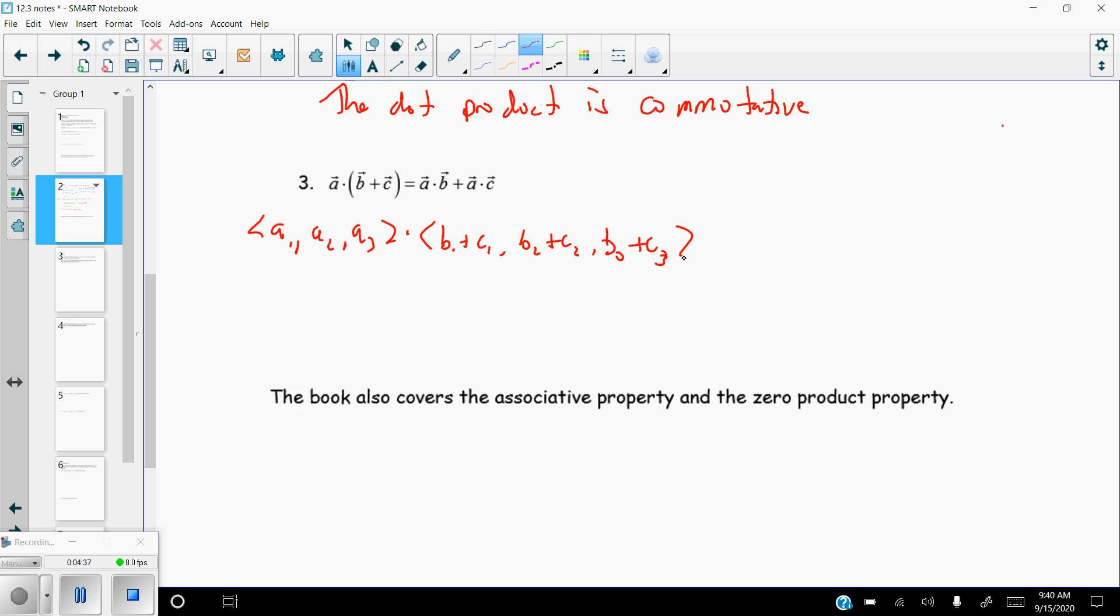Okay, that's b plus c, and if I'm going to dot those two things together, I'm going to multiply a1 times the first component, b1 plus c1. So if I distribute this a1 to b1 plus c1, what I end up with is a1 b1 plus a1 c1. And then I'll do the same thing, adding together the next one, which is going to be a2 b2 plus a2 c2 plus a3 c3.